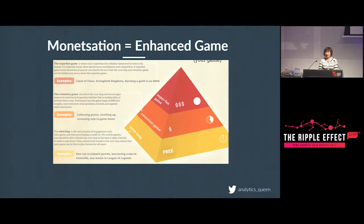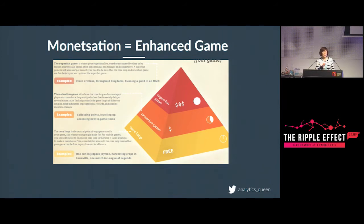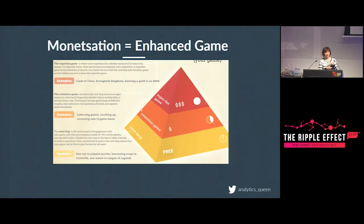The last bit, after both layers work, is the super fan game. Free-to-play games only monetize between 2% to 5% of players. And there's the 80-20 rule — 20% of those paying players will give you 80% of revenue, sometimes even 90%. The super fan layer is where those super players come from. That's where you have tournaments, leaderboards, clans — where people can compete and really be the best at your game. But that doesn't happen if the bottom two layers aren't fun enough.